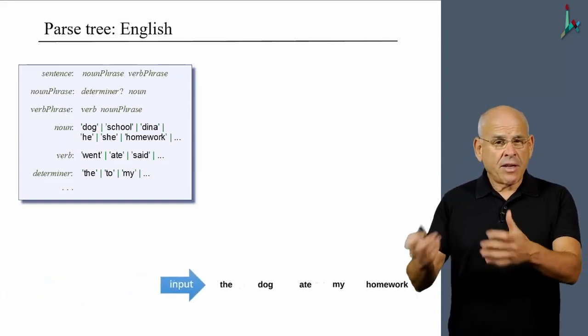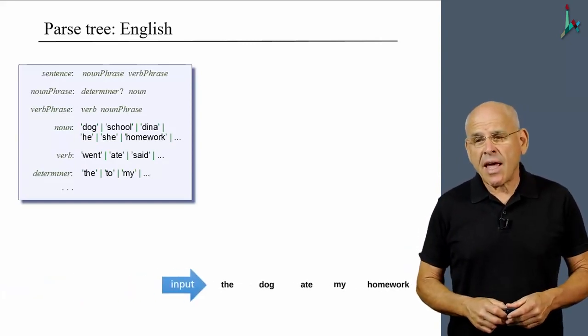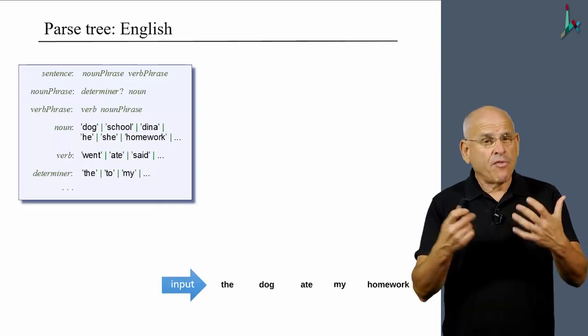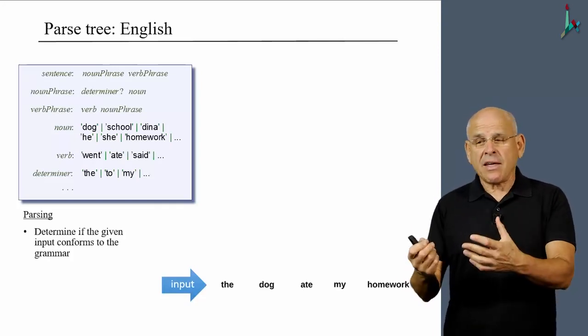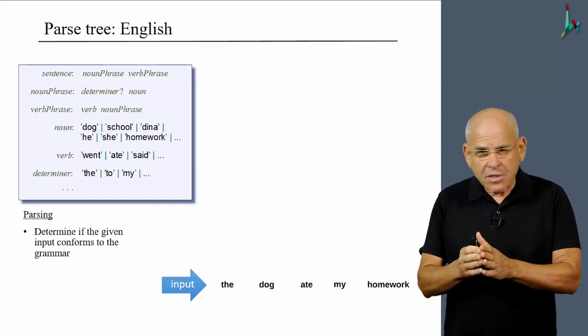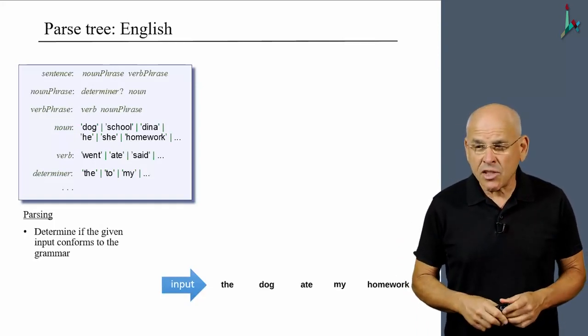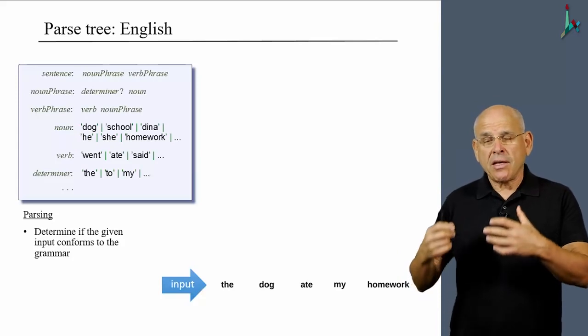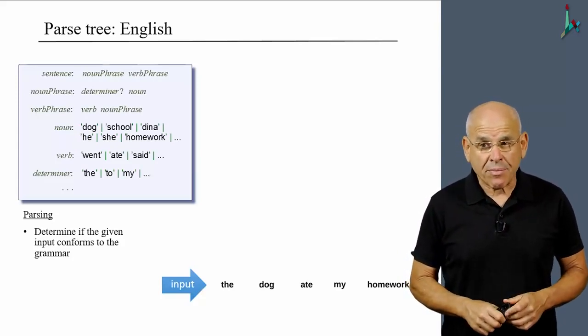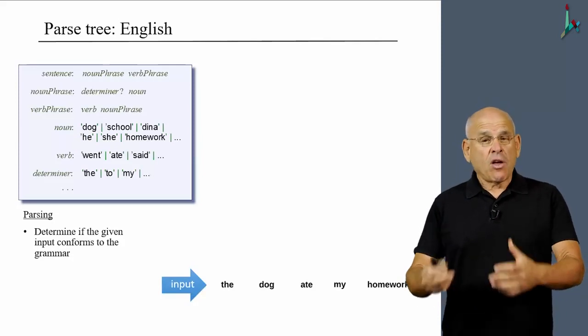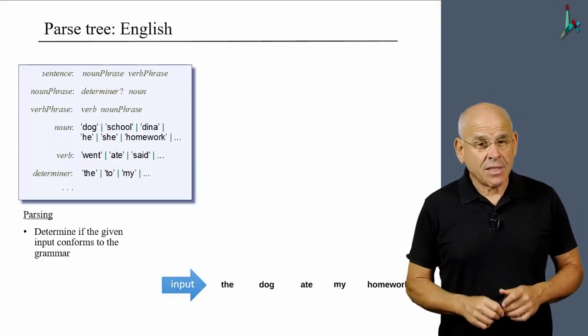We considered various examples of inputs and went in a very informal way through the art of deciding whether or not some sequence of words in the English language actually conforms to this particular grammar. And if so, it's a legitimate sentence in the English language.